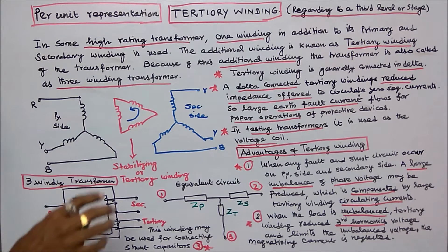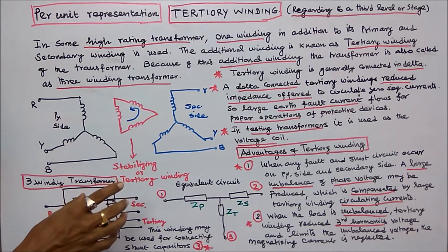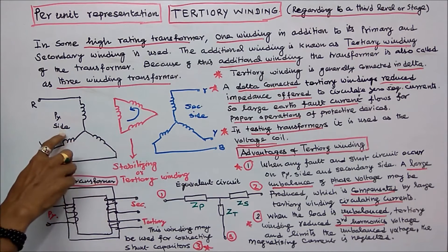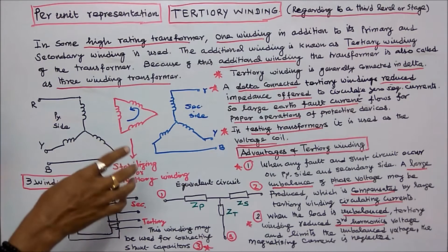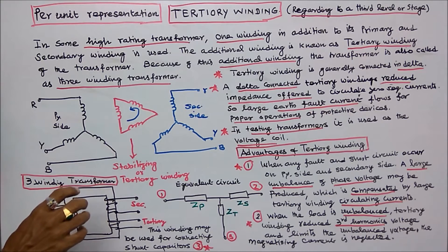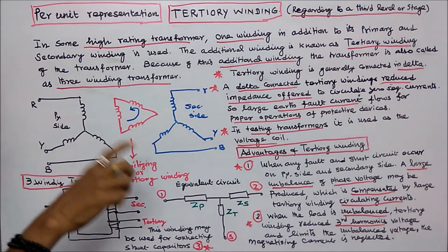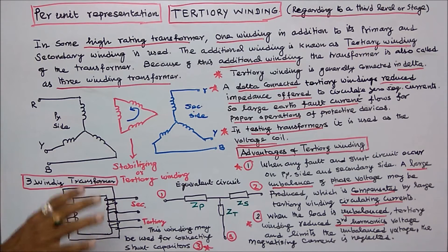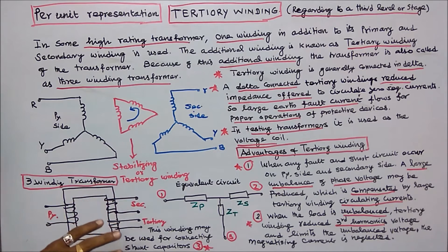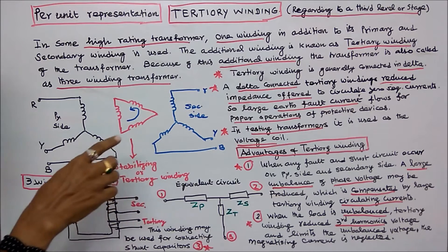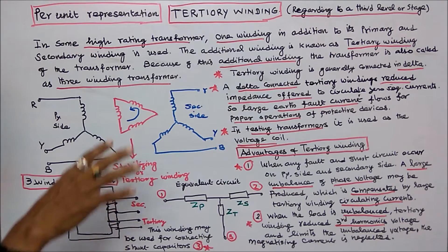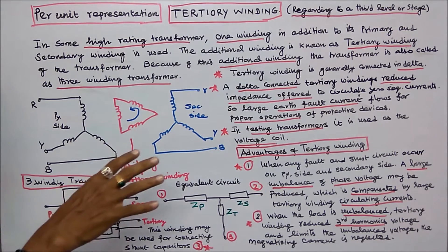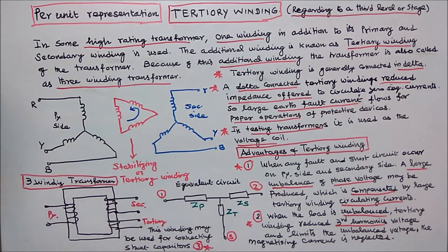Advantages of tertiary winding: Number one — when any fault and short circuit occur on the primary side and secondary side, a large unbalance of phase voltage may be produced, which is compensated by large tertiary winding circulating currents. Number two — when the load is unbalanced, the tertiary winding reduces third harmonic voltage and limits the unbalanced voltage. The magnetizing current is neglected. Number three — the winding may be used for connecting shunt capacitors.